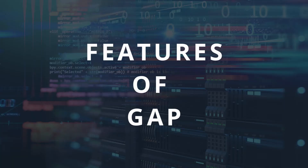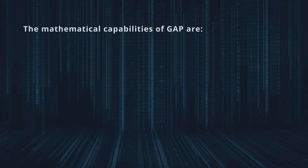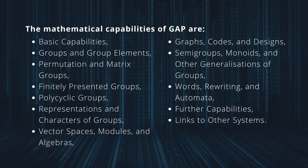Features of GAP — Mathematical capabilities. These are accessible through a large library of functions containing implementations of various algebraic algorithms. Separate packages of additional functions for specialized purposes which can be used like library functions. Data libraries containing large classes of various algebraic objects accessible by using GAP commands. The mathematical capabilities of GAP include basic capabilities, groups and group elements, permutation and matrix groups, finitely presented groups, polycyclic groups, representation and characters of groups, vector spaces, modules, algebras, graphs, codes, and designs, semi-groups, monoids and other generalizations of groups, words for writing and automata, and links to other systems.